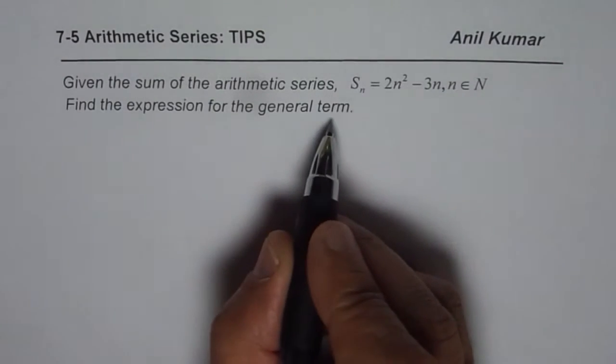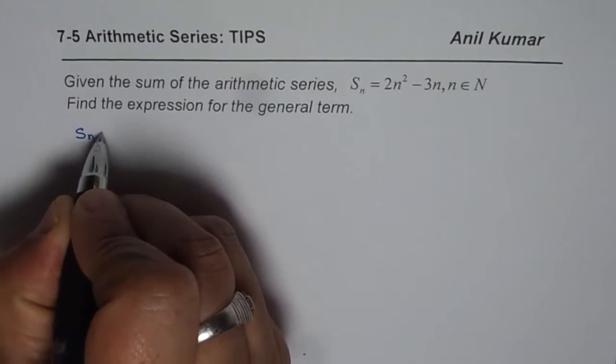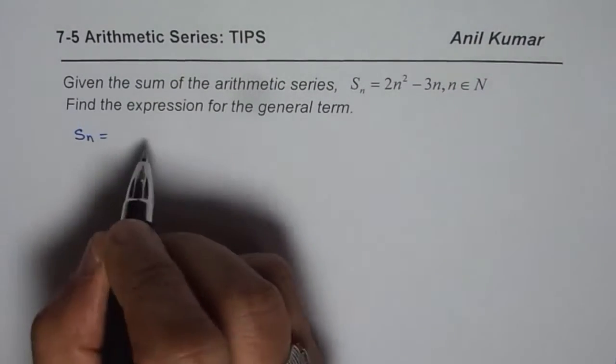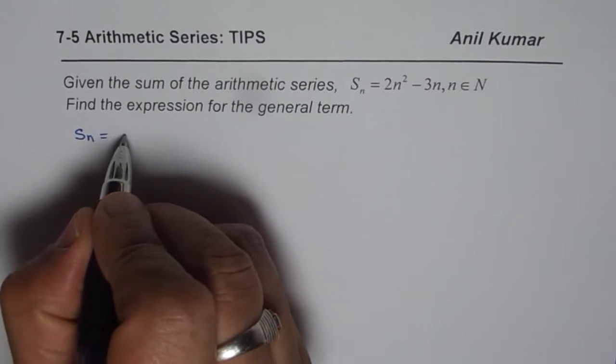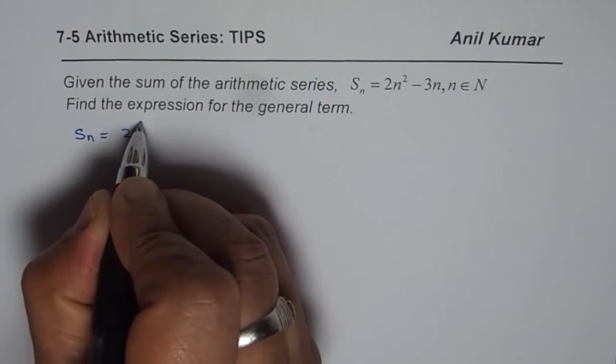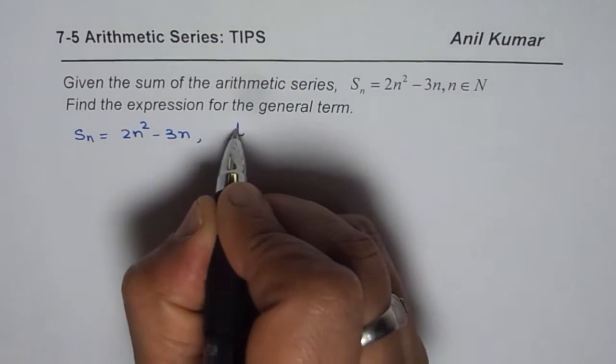When we say general term, it means t_n. We are given S_n, the sum of n terms of this particular arithmetic series, is 2n² minus 3n, and what we need to find is t_n.